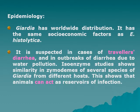Epidemiology: Giardia has worldwide distribution with the same socioeconomic factors as Entamoeba histolytica — present in crowded areas with low sanitation. It is suspected in traveler's diarrhea and outbreaks due to water pollution. Isoenzyme studies show similarity in zymodemes of different Giardia species from different animal and bird hosts, indicating animals can act as reservoirs of infection.